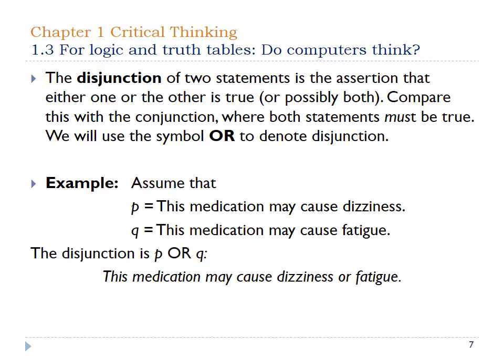A disjunction is when either one of the statements could possibly be true and that would give you what you want. Typically, we use the symbol or in this case. The red butterfly wouldn't be a good example because I didn't really want red alone or butterflies alone. In this example, it says the medication may cause dizziness or fatigue. It doesn't necessarily mean it's going to cause both — it could cause one or the other, or both. So the two statements are: the medication may cause dizziness, and the medication may cause fatigue.